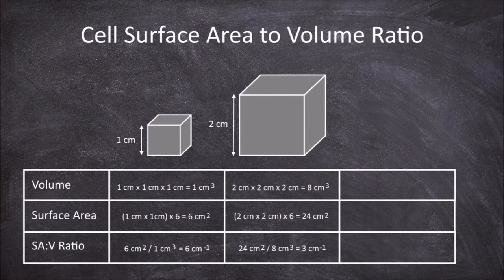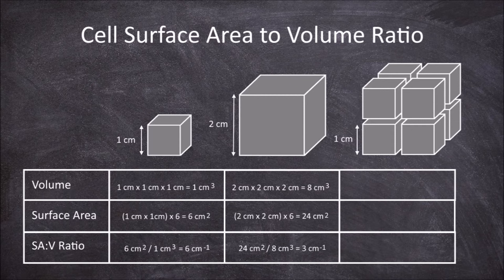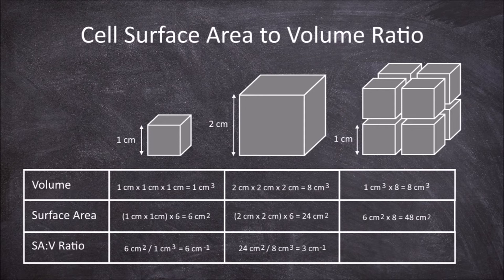If instead of a bigger cube there were 8 smaller 1cm-length cubes, the volume would be the same as the larger cube: 1cm³ × 8 = 8cm³ total volume. The surface area would be higher though — 6cm² × 8 = 48cm² total surface area, compared to 24cm² for the larger single cube. This gives a higher surface area to volume ratio: 48cm² ÷ 8cm³ = 6cm⁻¹, which is the same ratio as one single smaller cube.